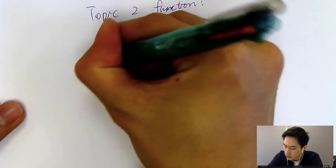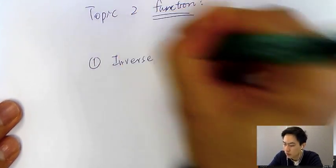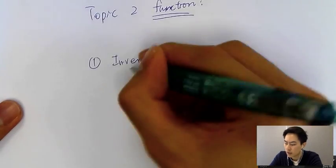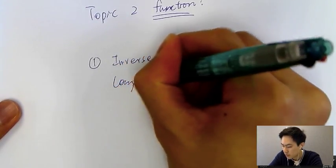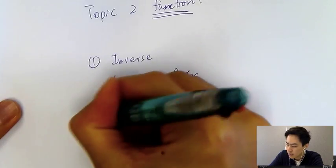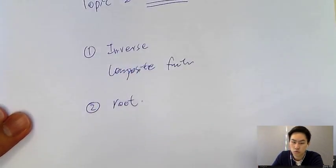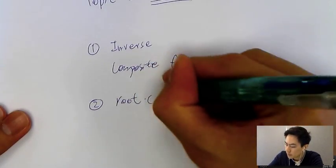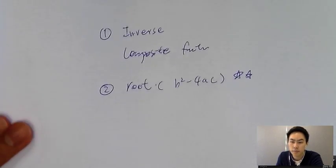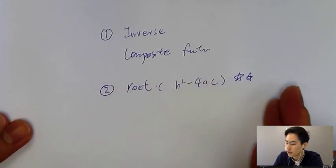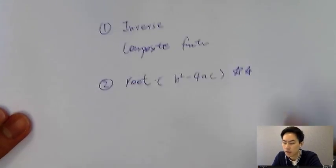The first major part will be inverse functions and simple composite functions. The second type will be root questions — the discriminant b squared minus 4ac. This is very, very important, and usually you'll have at least one question on it every year.